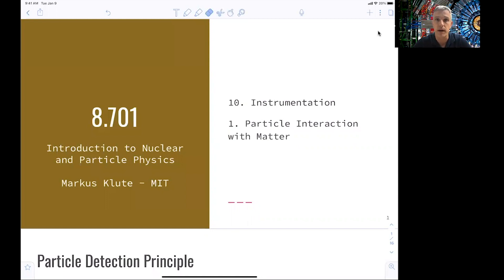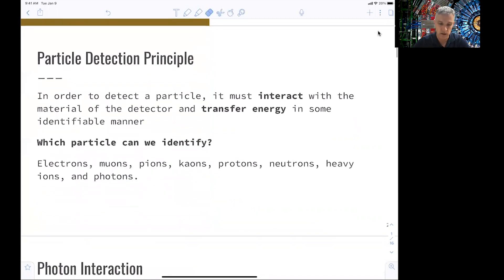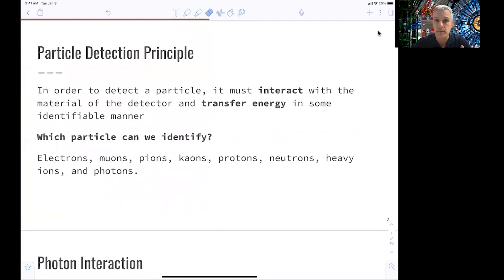So what happens when particles traverse through a piece of material? The underlying principle of detection is that we do have to have some sort of interaction of the material of the detector with the particles going through. There needs to be some sort of transfer of energy which can be identified. Then that piece of energy can be amplified, separated from noise, and so on. But this first part of any detection process is this interaction of this particle with matter.